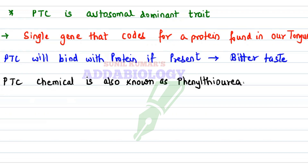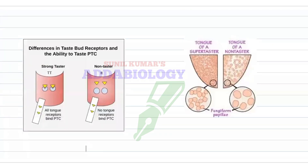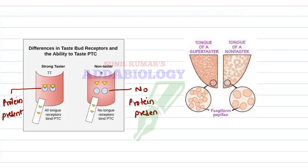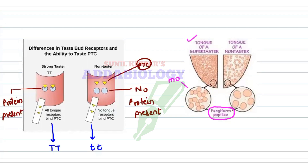Look at this diagram: on one side you can see the protein gene is present which binds to the PTC, making that individual a taster; but on the other one there is no protein present, so PTC doesn't bind — giving us capital T capital T and small t small t. The taste is responsible for more fungiform papillae. PTC tasters will have more fungiform papillae, while non-tasters will have very few fungiform papillae.